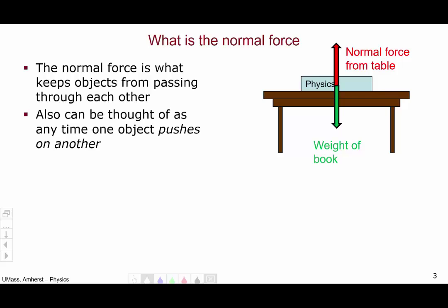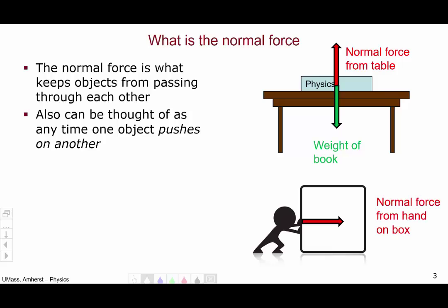In general, a normal force can be thought of as any time one object pushes on another. In the example of the book on the table, the table is pushing on the book upward, keeping it from falling through. Another example with an active agent is a person pushing on a box. What actually is the force on the box? It's a normal force from the hand on the box.